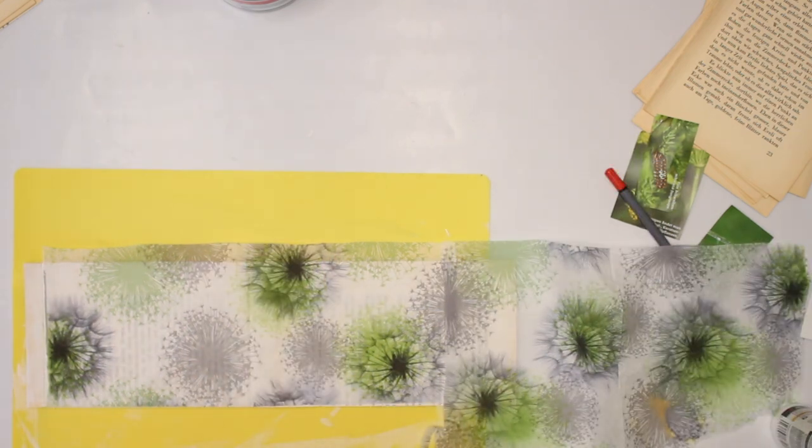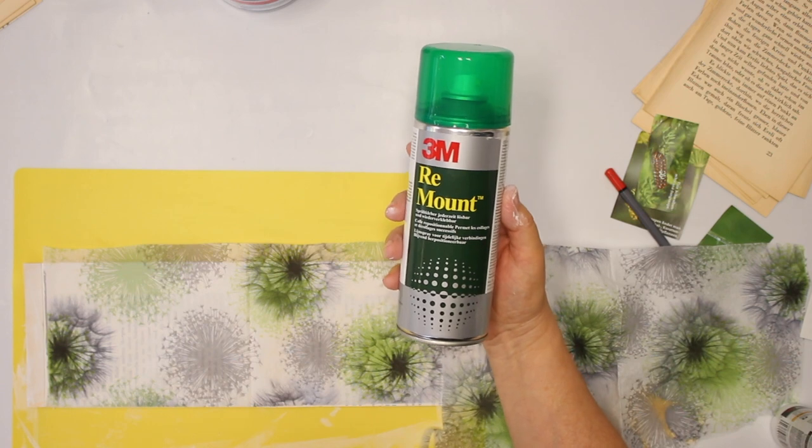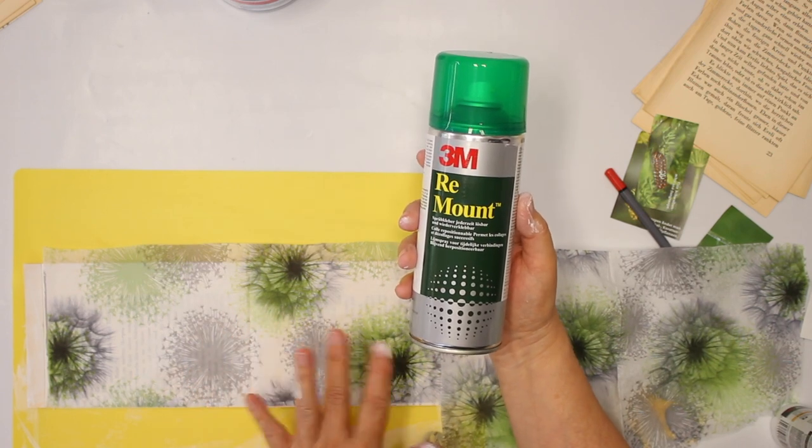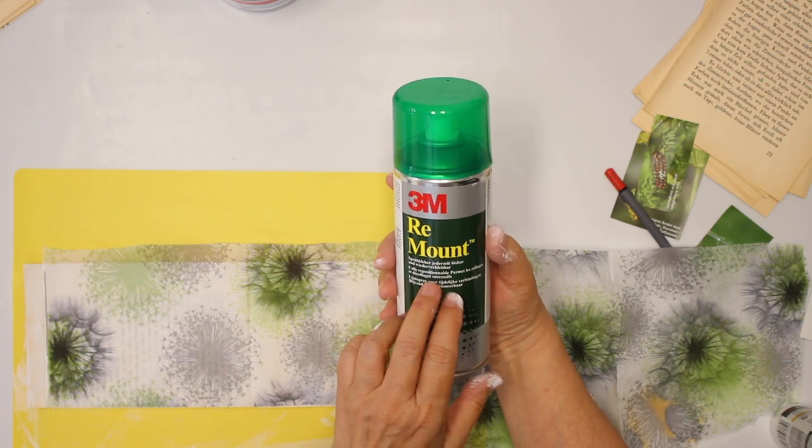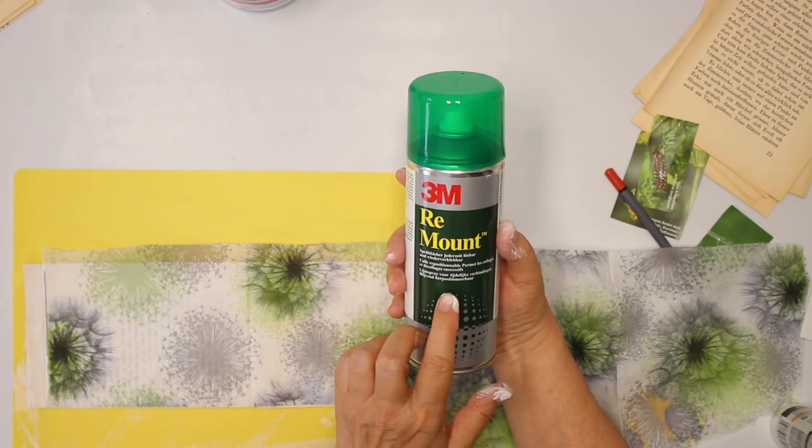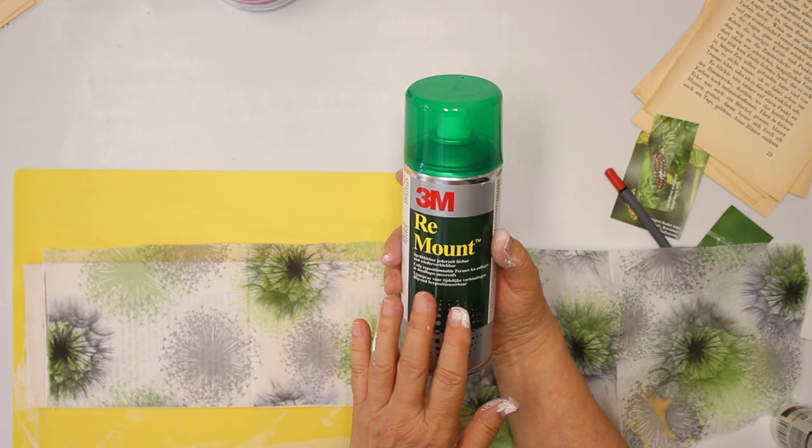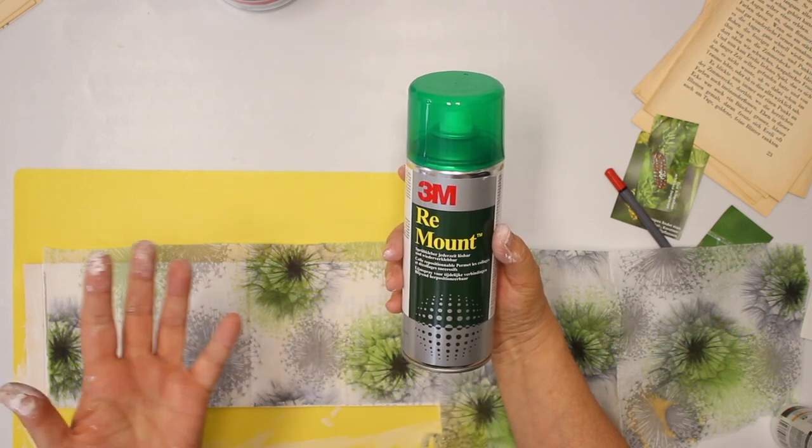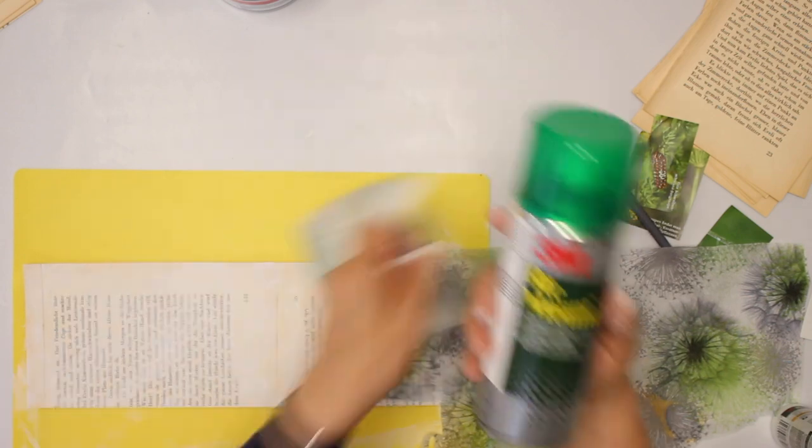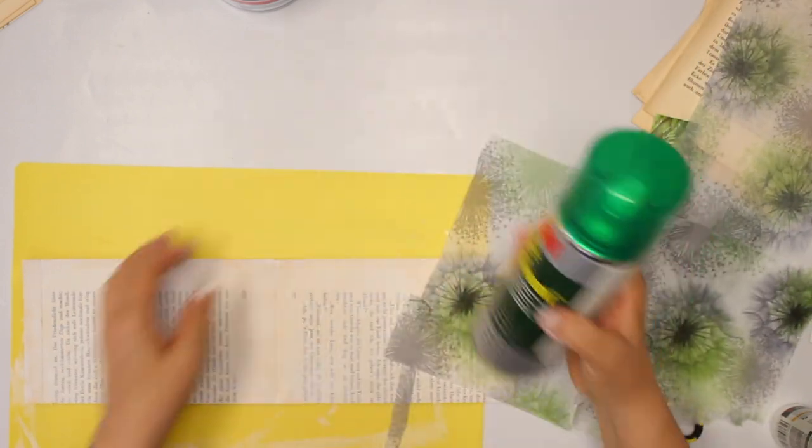And I'm gonna go outside with this spray. Every time when I have a large area to add napkins, I want this repositionable spray. I would recommend do it either in a well-ventilated area or as I do, I'm gonna go outside, spray my paper here, and then I will be back.